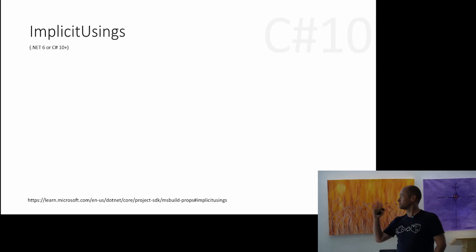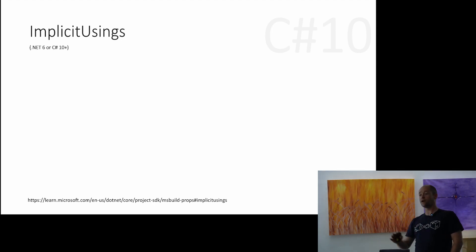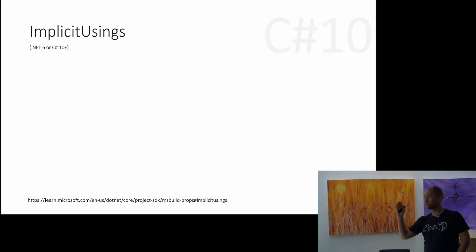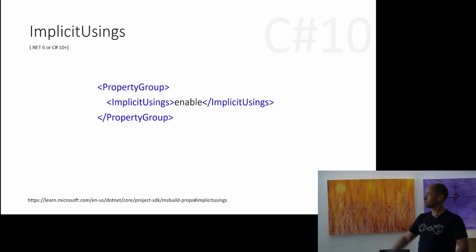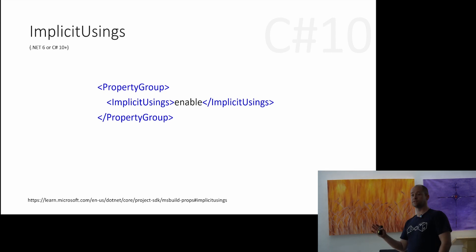The first couple I'm going to look at are around usings. The first one, which came out in .NET 6 and C# 10, is implicit usings. We've all started a new file with using System, LINQ, generic collections, etc. Now, with the new project types, you can use those types without even referencing them — they appear automatically. It's done through an MSBuild project property, and it's now standard in all new project templates, so they won't appear when you add a new C# file.